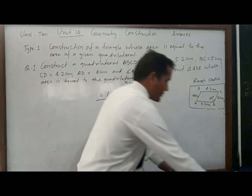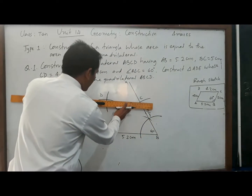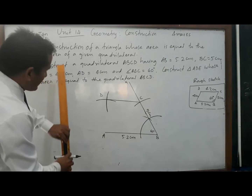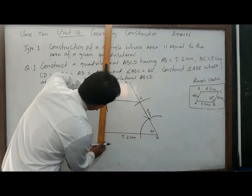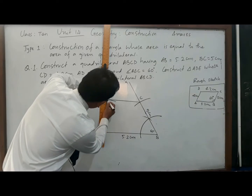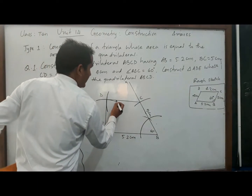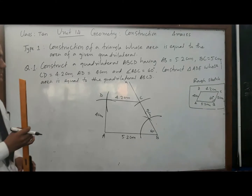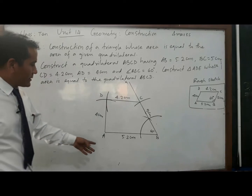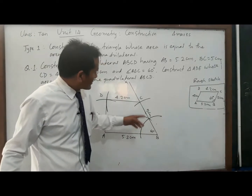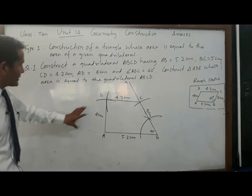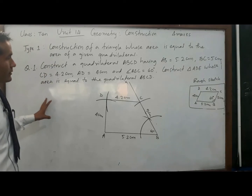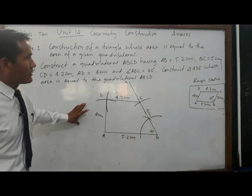Now join D to C with the scale — draw line segment DC. Then join line segment AD. So CD is 4.2 cm and AD is 4 cm. We have now constructed quadrilateral ABCD with AB = 5.2 cm, BC = 5 cm, CD = 4.2 cm, AD = 4 cm, and angle ABC = 60°.